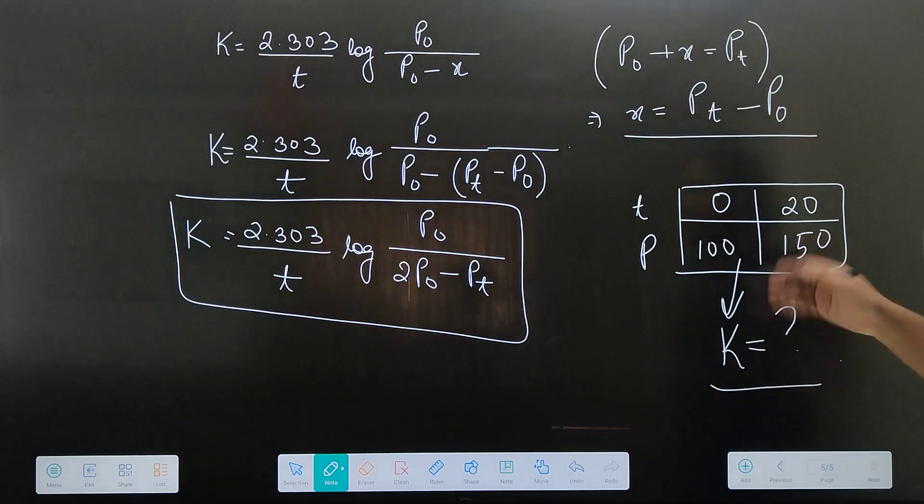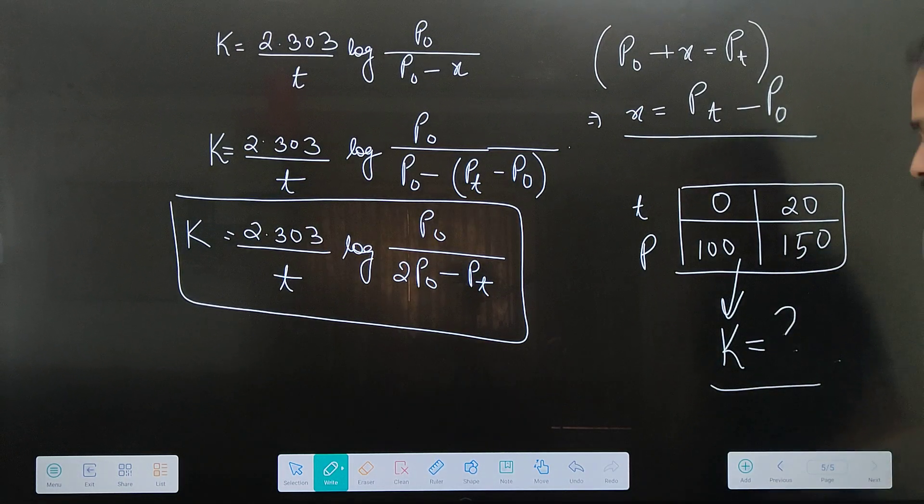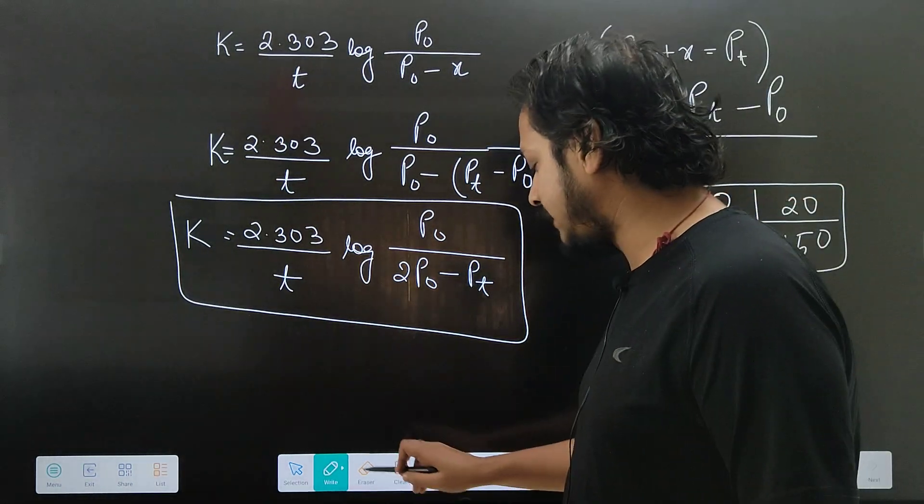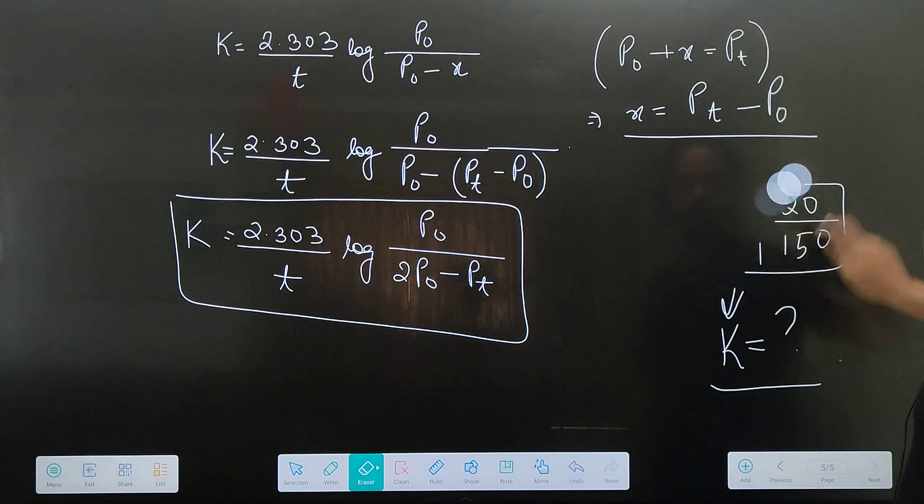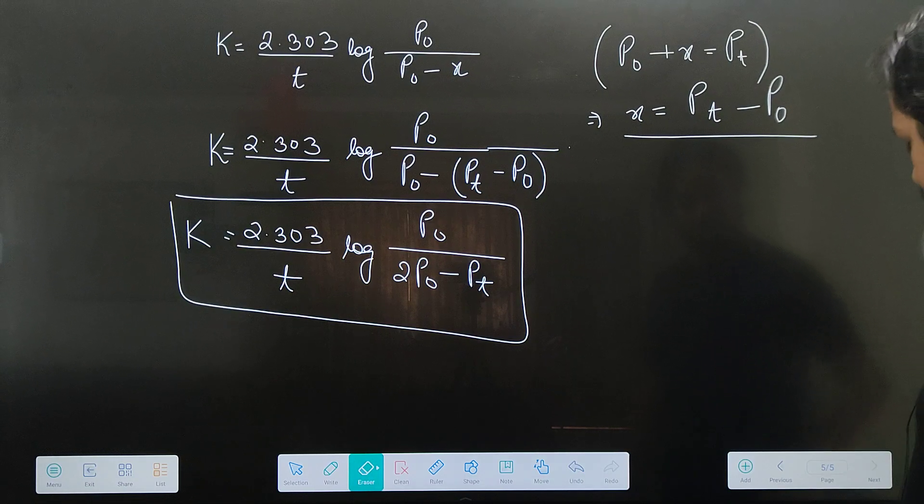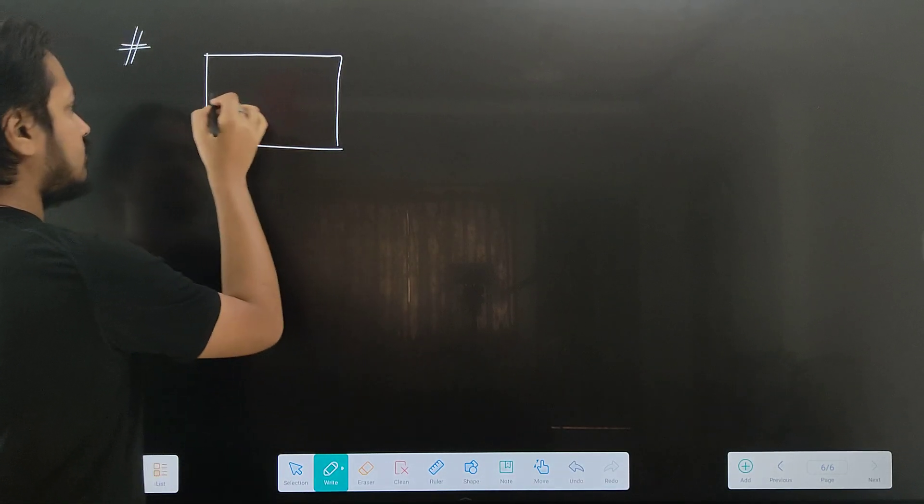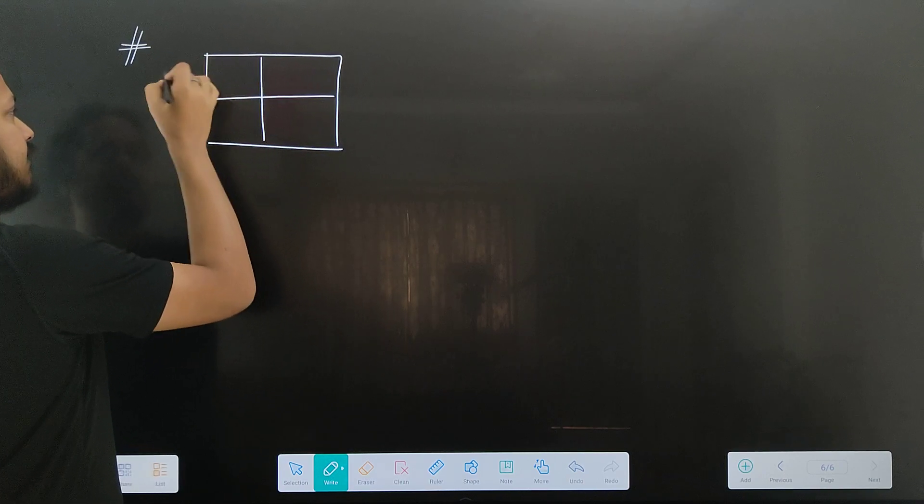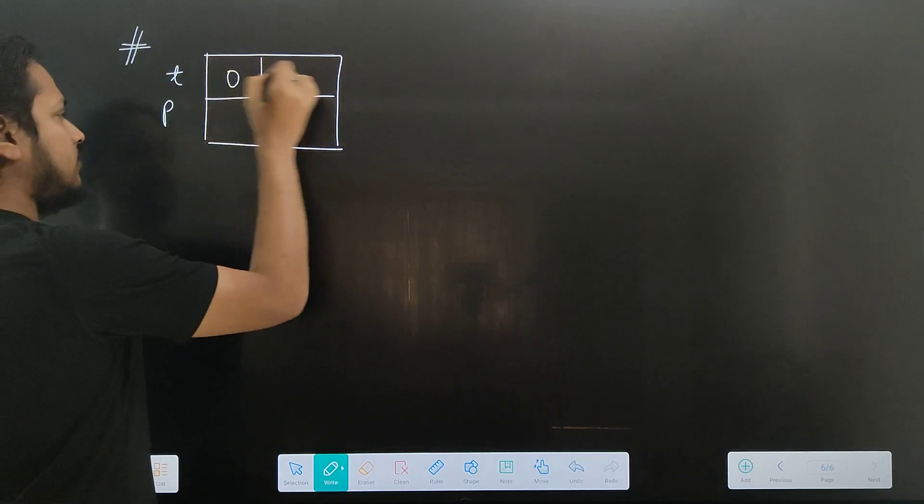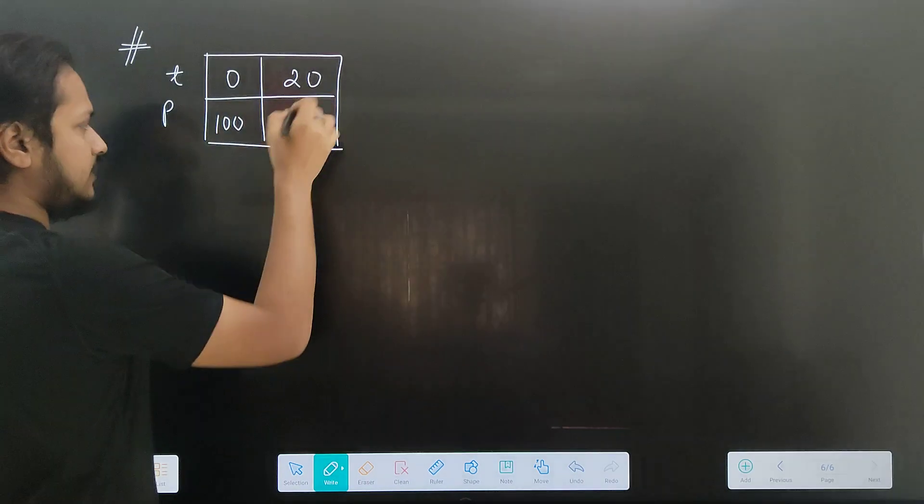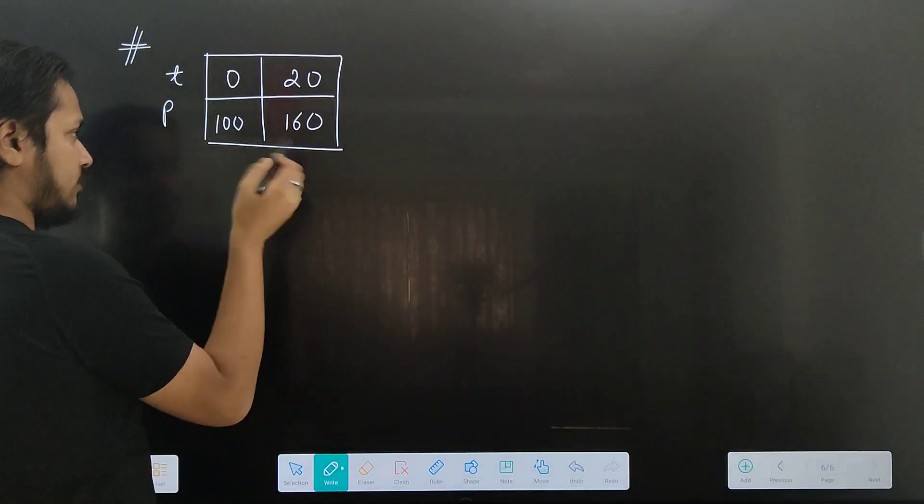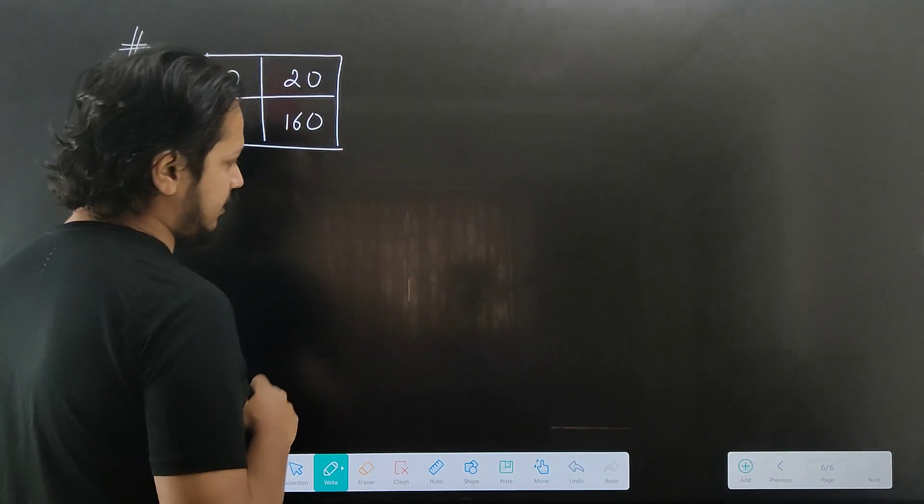In the next video I will show questions. A common question type: they give a table with time and pressure. At time 0, pressure is 100; at time 20, pressure is 160 - total pressure addition. They will ask you to find the rate constant for the reaction.